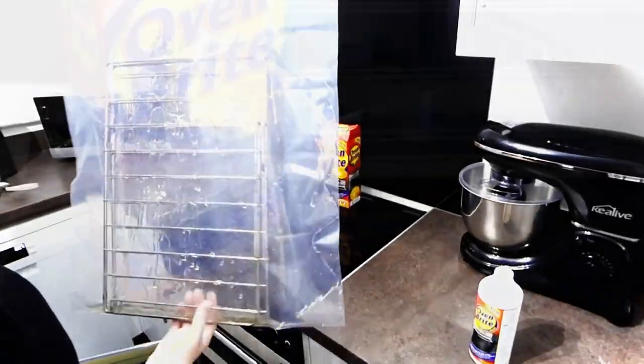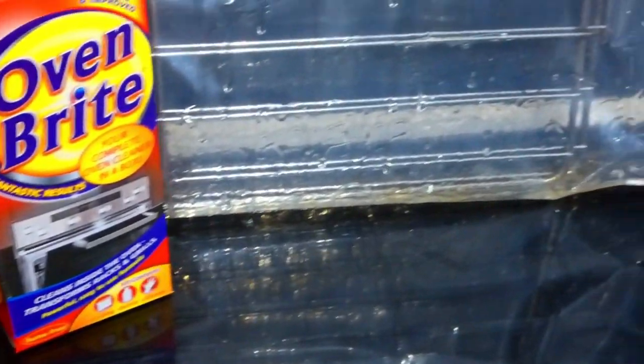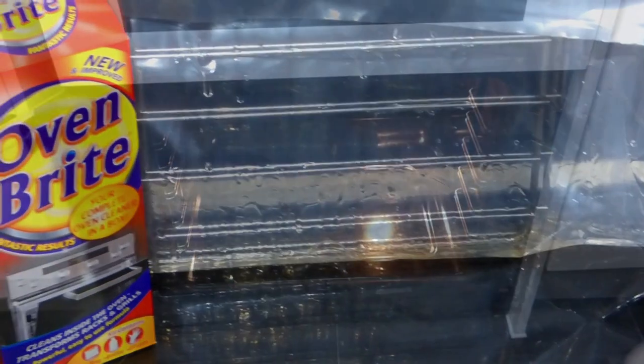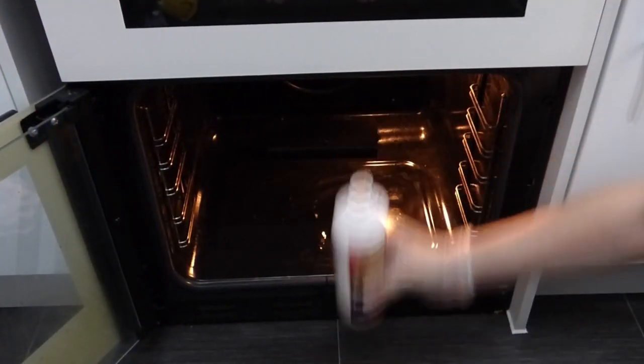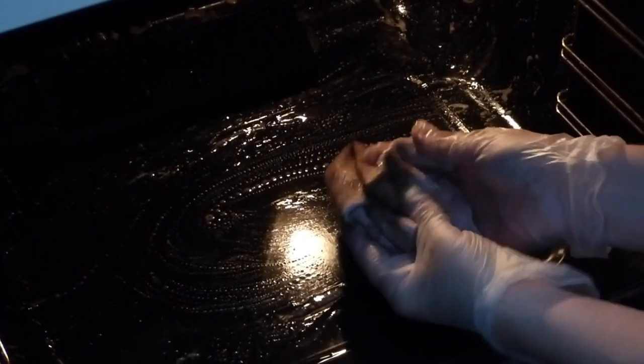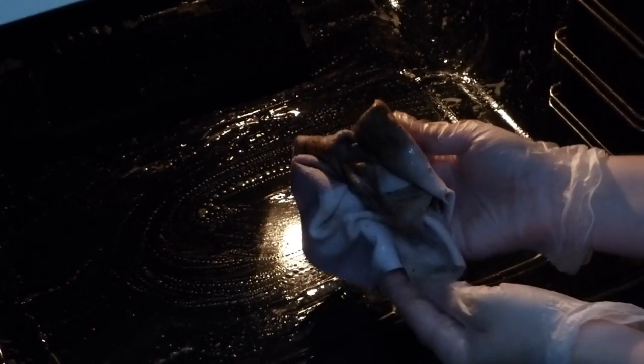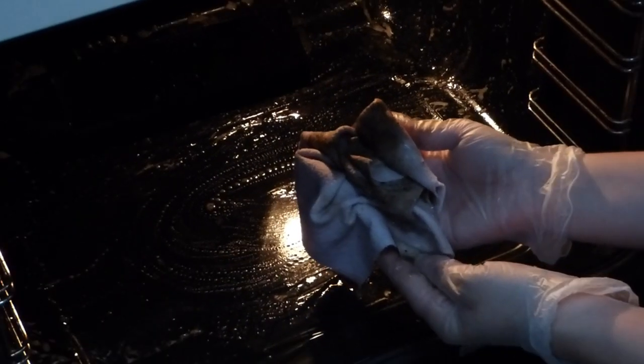Pour the solution onto the base of your oven and then you are going to start spreading this with a cloth over every part of the inside of your oven. I mean, look at the dirt. Jesus, take the wheel, it's like some sort of coal factory in there.